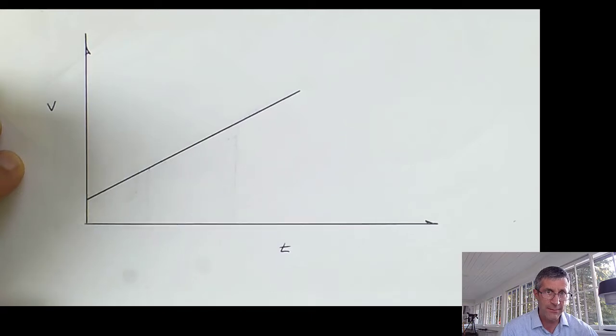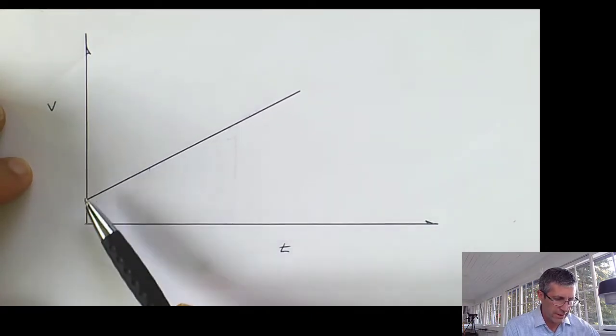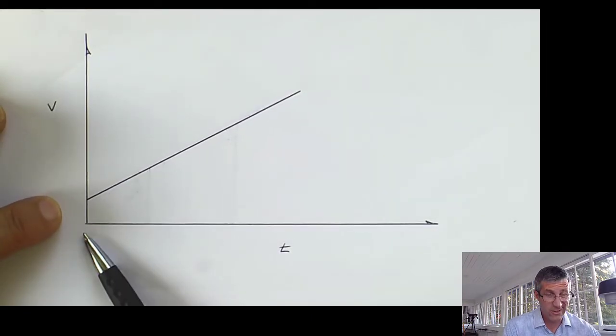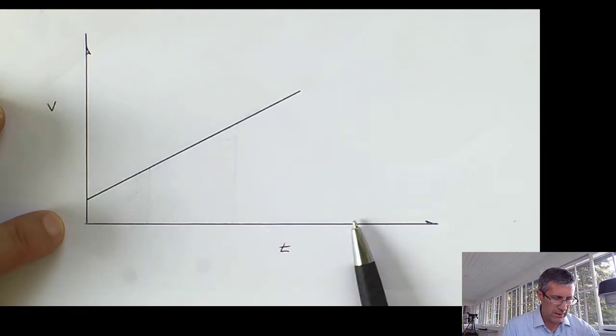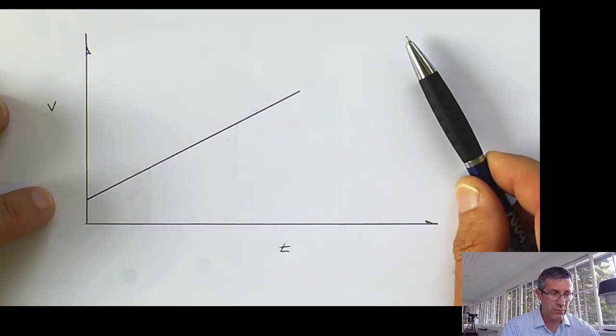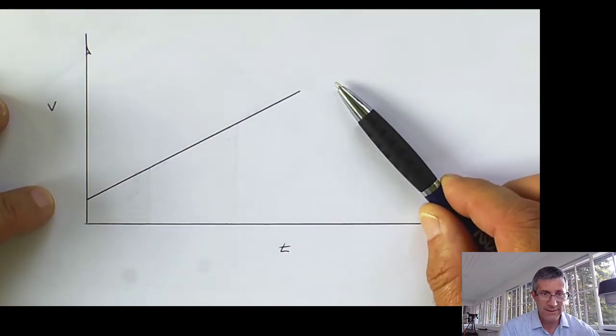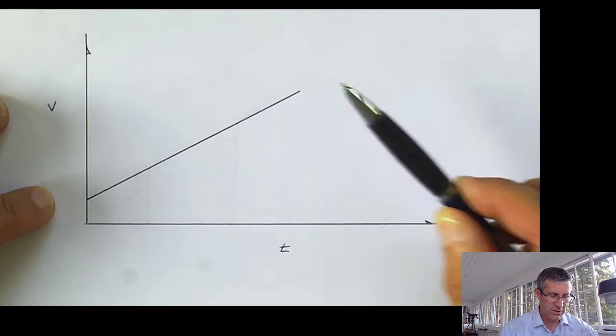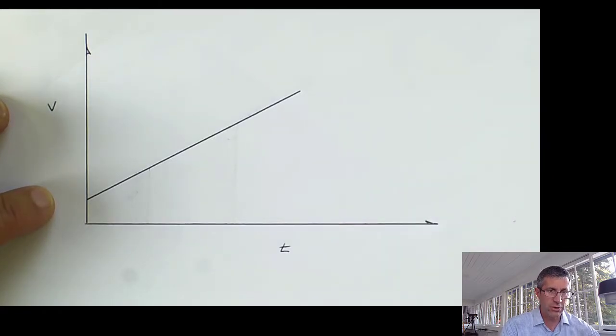I'm going to look at a velocity-time graph. Notice my velocity is not starting at zero, just to make it fun, and time's going to go on a straight line. So you should look at this and say, aha, I can tell two things from this. I could use the area under the curve, and that's going to tell me the change in displacement, or I could use the slope, and that's going to tell me my acceleration.